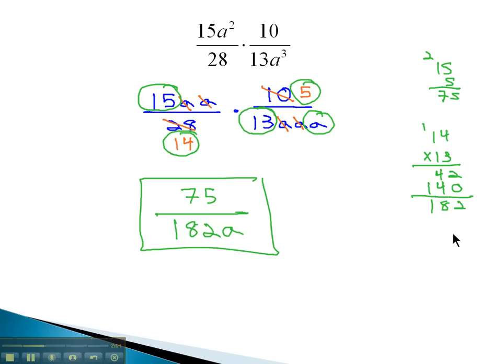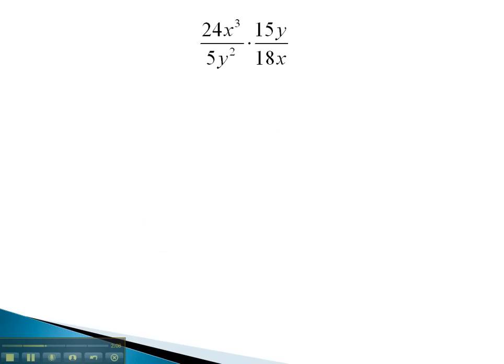Let's try another example that has us reducing variables as well as integers. In this problem, we have 24x³—x³ means we have 3x's multiplied together—over 5y², or 2y's multiplied together, times 15y over 18x.